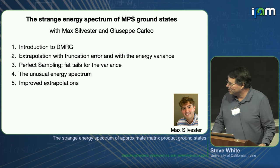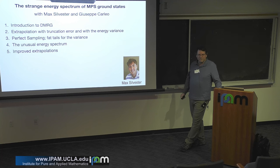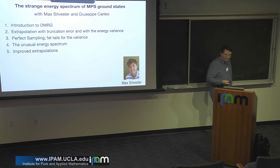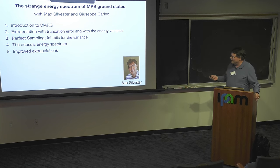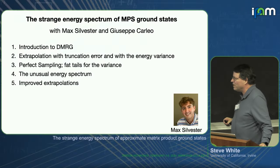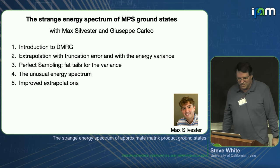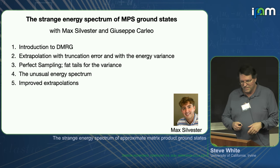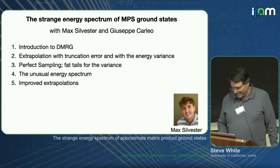I'll introduce DMRG and some of the details of how it works. In particular, one of the very useful practical things is to do extrapolations in the truncation error. This started the idea to extrapolate with the energy variance, and in particular we wanted to do this with something called perfect sampling. We found along the way that there were very fat tails in the variance that were a surprise, and then we traced this down to an unusual energy spectrum. In the end, we were able to deal with this bad behavior and still get an improved extrapolation.